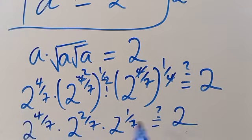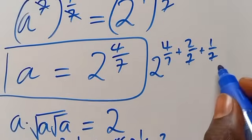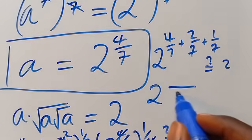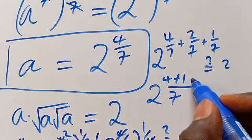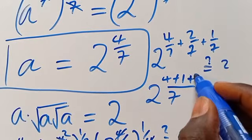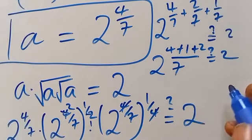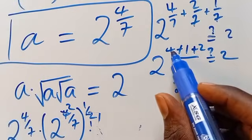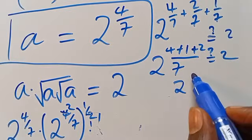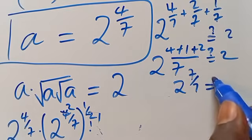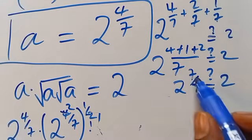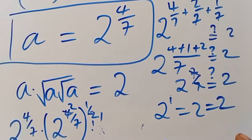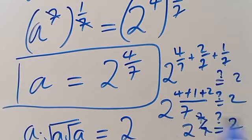Since we have the same base, we add the powers. The common denominator is 7: 4 plus 2 plus 1 equals 7, giving 2 to the power of 7 divided by 7. We cancel out the 7s, leaving 2 to the power of 1, which equals 2. So you can see that 2 to the power of 4 divided by 7 satisfies the problem.